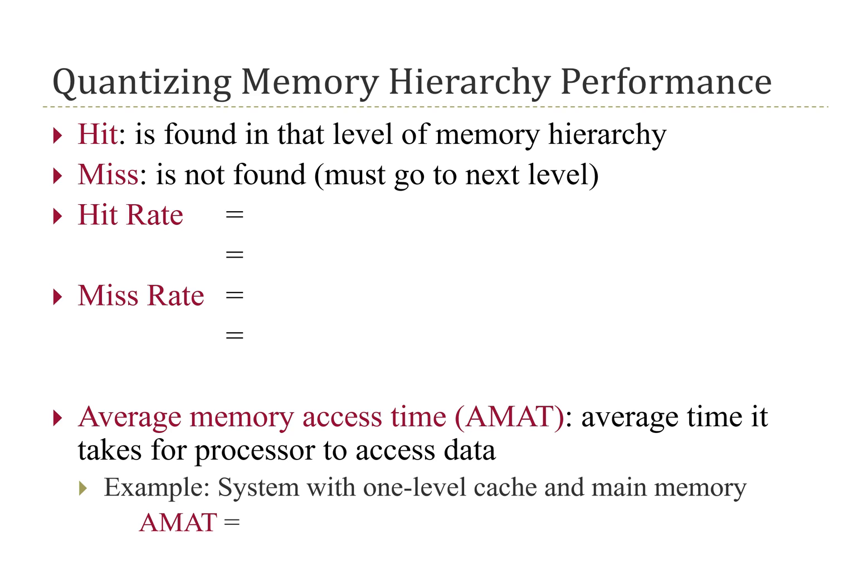To quantify how well a particular memory hierarchy is doing, we have a couple of common metrics. First, some terminology: we say something is a hit in a particular level of the hierarchy if it is found in that level. So if we look for an address and it is found in the cache, we say it is a cache hit. If it is not found in a given level, then it is called a miss, meaning we have to go to the next level of the hierarchy. We can be interested in how often we are hitting or missing at a particular level.